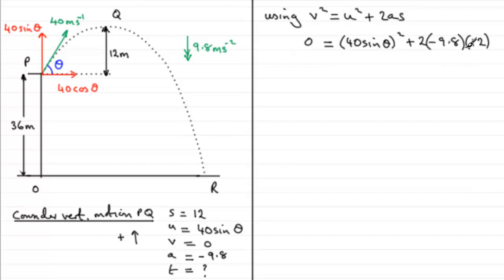So if we add that to both sides, we end up with (40 sine theta)² equals 235.2. Now I'm going to take the square root of both sides, and therefore we would have 40 sine theta equals the square root of 235.2.